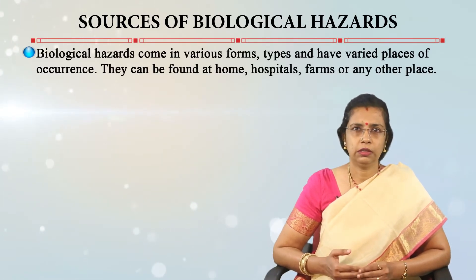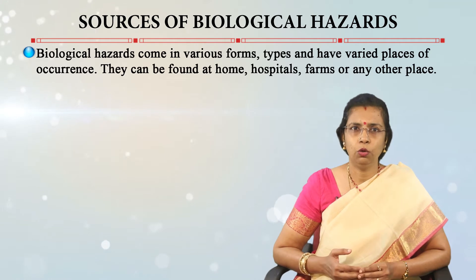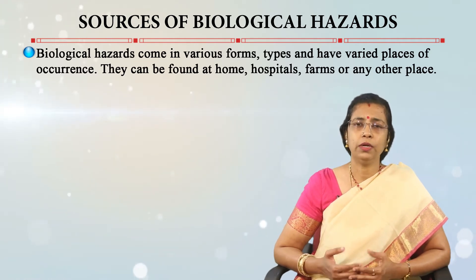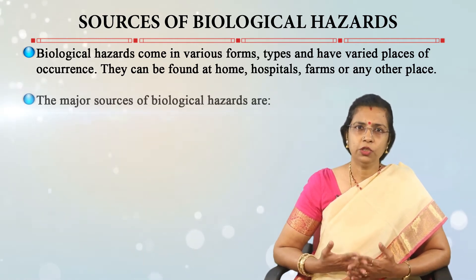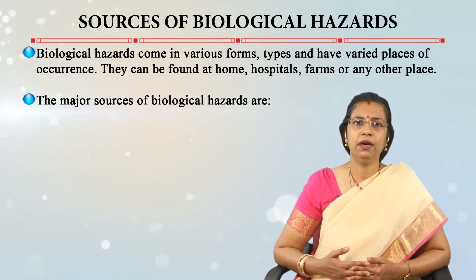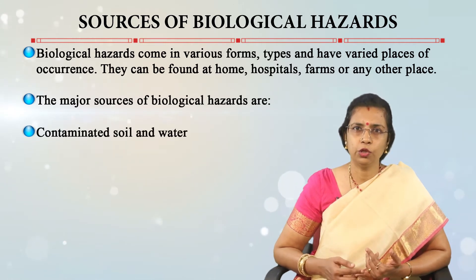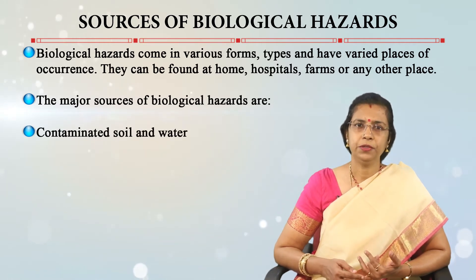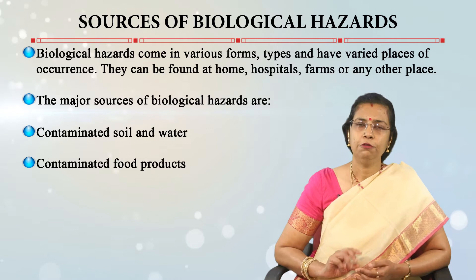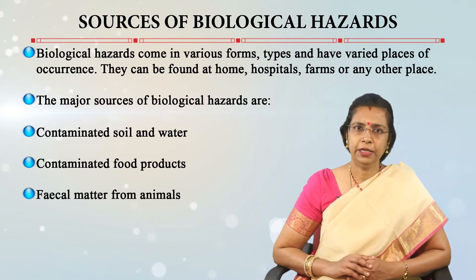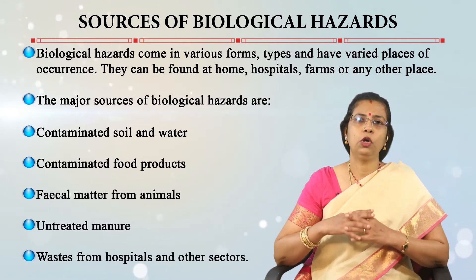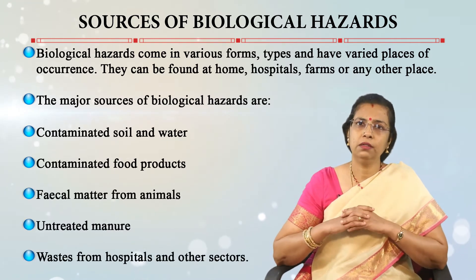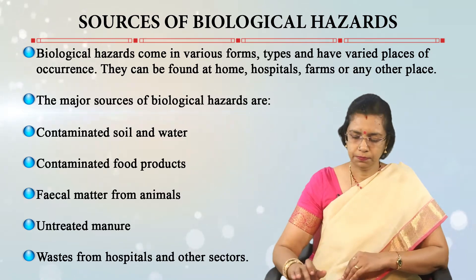Let us now see the sources of biological hazards. They come in various forms, types, and have varied places of occurrence. They can be found at home, hospitals, farms, or any other place. The major sources of biological hazards are contaminated soil and water, contaminated food products, fecal matter from animals, untreated manure, and waste from hospitals and other sectors.